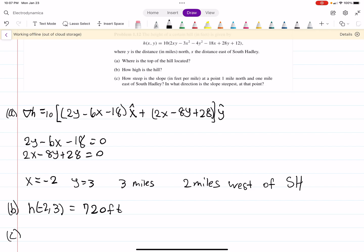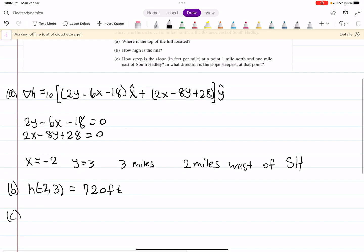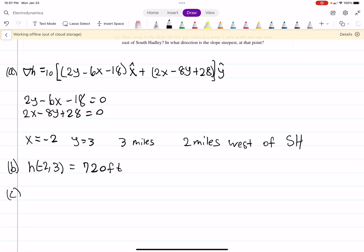Part C says, how steep is the slope at a point 1 mile north and 1 mile east, and in what direction is the slope steepest at that point? Well, we already know what our gradient of y is, and now what we're going to do is simply plug in 1 for our values. And when you do that, you end up getting 220 in the minus x-hat direction, y-hat direction.